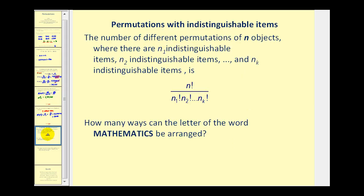Let's take a look at one more idea. Sometimes we have a permutation where the items are indistinguishable — we can't tell them apart — which means that when we switch the order of those items we wouldn't be able to tell the difference. The number of different permutations of N objects where there are n₁ indistinguishable items, n₂ indistinguishable items, and so on, is given by N factorial divided by n₁ factorial times n₂ factorial and so on, where n₁ and n₂ are the number of indistinguishable items of each type.